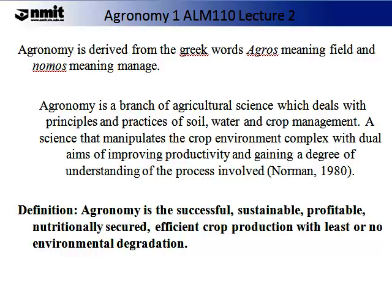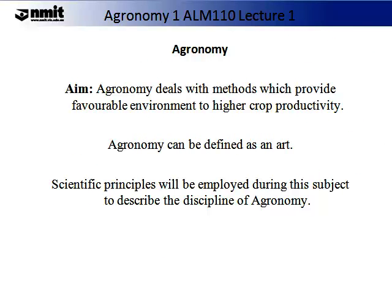Agronomy is derived from the Greek words agros meaning field and nomos meaning manage. Agronomy is a branch of agricultural science which deals with the principles and practices of soil, water and crop management. A science that implements the crop environment complex with dual aims of improving productivity and gaining a degree of understanding of the principles involved. This was defined by Norman in 1980. The definition I wish to use is that agronomy is the successful, sustainable, profitable, neutrally secured, efficient crop production with least or no environmental degradation. Agronomy deals with the methods which provide favourable environment to higher crop productivity.